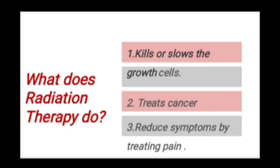What does radiation therapy do to cancer cells? Number one, it kills or slows the growth of cancer cells. Number two, it treats the cancer. Number three, it reduces symptoms — particularly pain. When a cure is not possible, radiation may be used to treat pain and other problems caused by cancer cells or tumors.